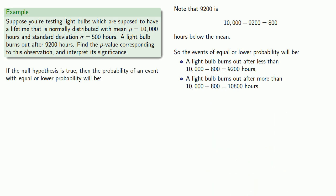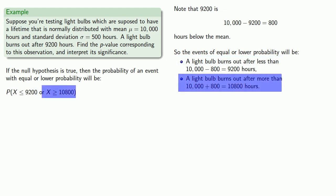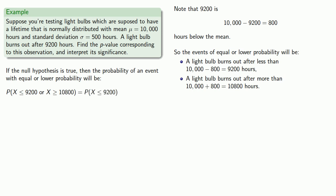So if the null hypothesis is true, the probability of an event with equal or lower probability will be the probability that our light bulb burned out in less than or equal to 9,200 hours, or it lasted greater than or equal to 10,800 hours. If a light bulb burns out after less than or equal to 9,200 hours, it certainly won't last more than or equal to 10,800 hours. So these events are mutually exclusive, and we can split the probabilities.